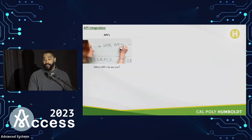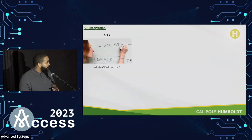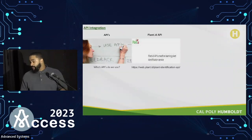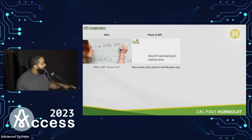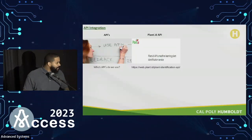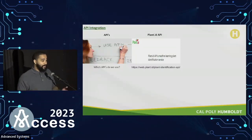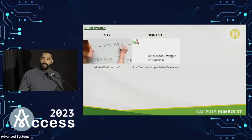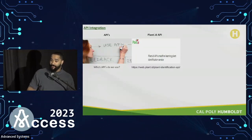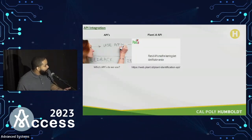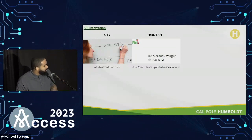That brings us to the APIs. We use a multitude of APIs — four are our main ones. The first, which Sorel recommended specifically in the project proposal, is our Plant ID API. It allows the user to upload photos and identify the plant. If you're out for a nature walk and see an unfamiliar plant, you can take a picture, upload it to the site, and the site will identify it using a machine learning service.